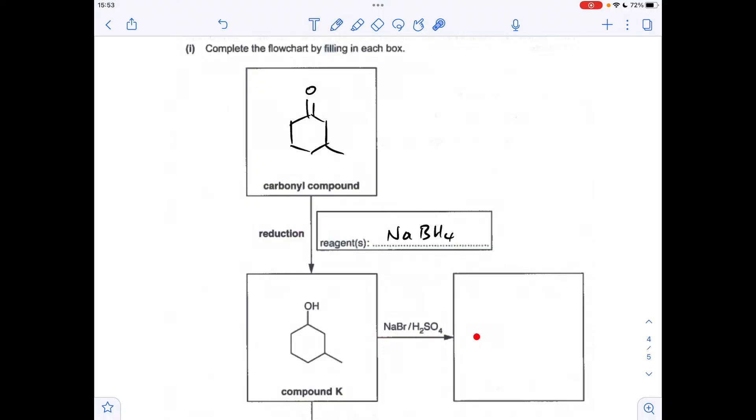Move across to the right now. What's going to be reacting with compound K? When you have this combination of sodium bromide and sulfuric acid, it's actually HBr that's reacting. We're going to get a substitution reaction taking place where the OH group will be substituted by that bromine there.